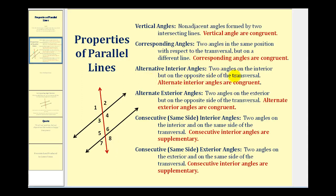Alternate interior angles are two angles on the interior, but on the opposite side of the transversal. Interior angles are the angles between the two parallel lines. Therefore, the alternate interior angles will be angle three and angle six, as well as angle four and angle five. And again, these angles are congruent.